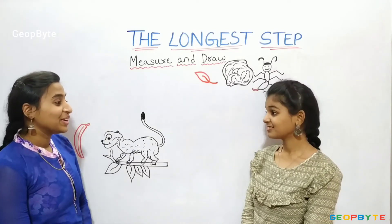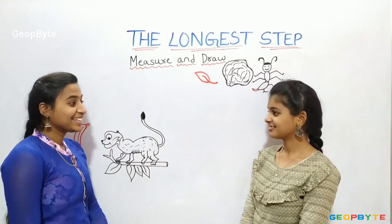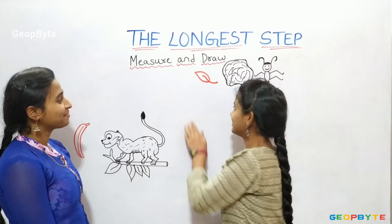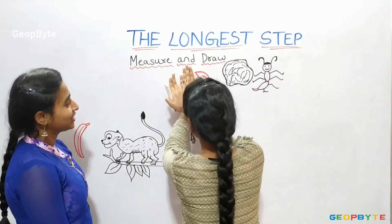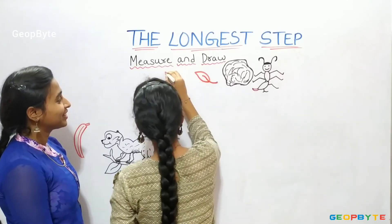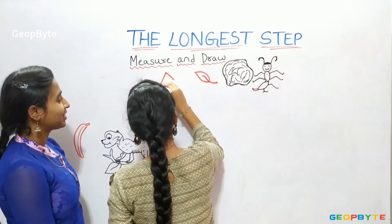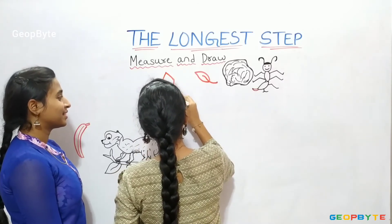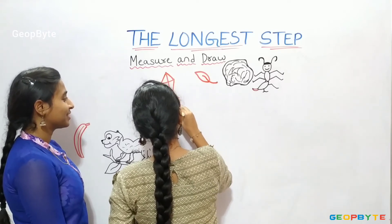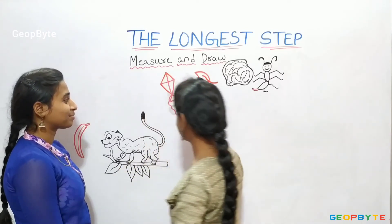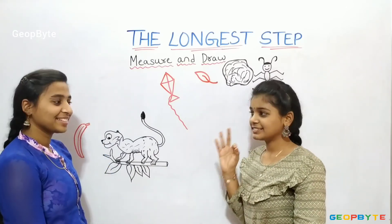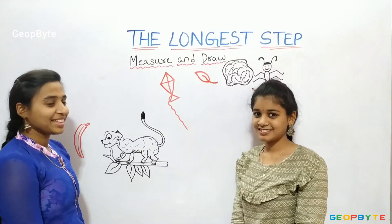Now you draw a kite seven fingers away from the monkey. You draw a cloud three fingers away from the leaf. Let us draw. Now you draw a cloud three fingers away from the kite.